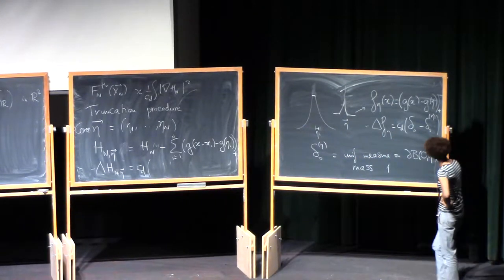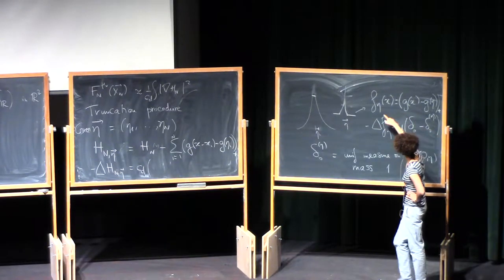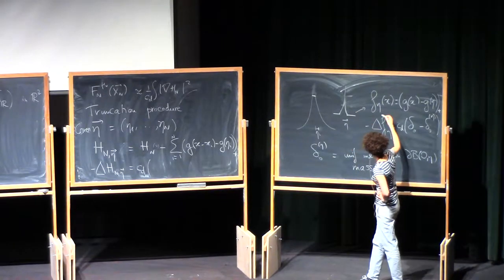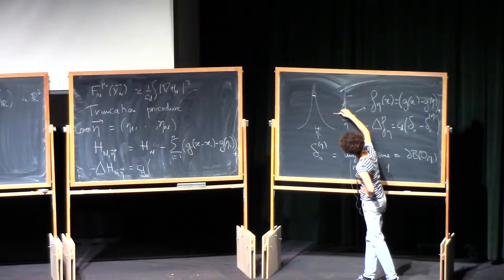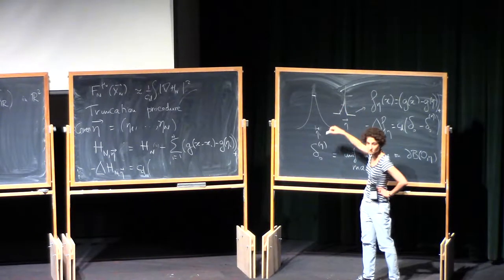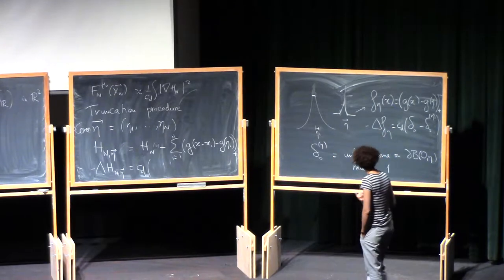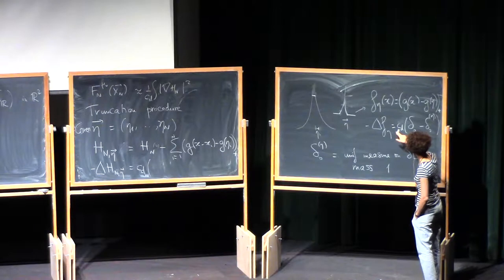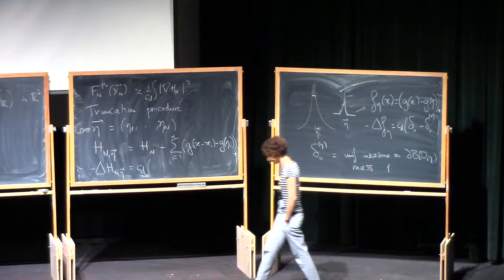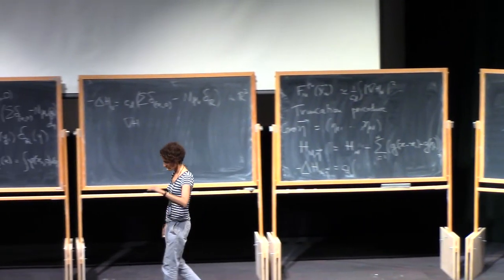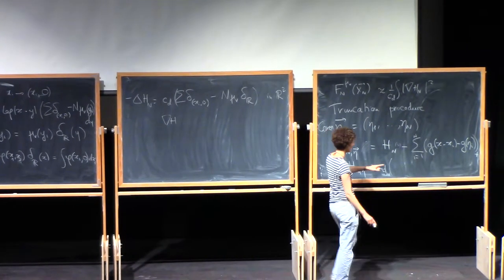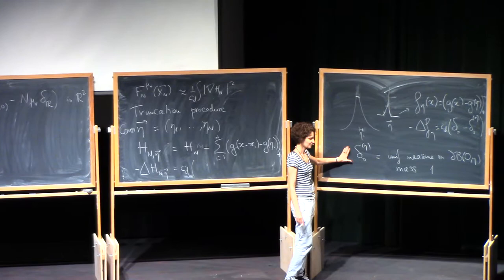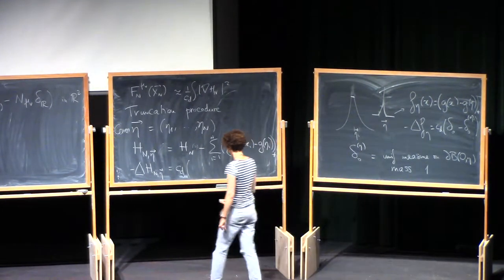It's a computation. The other way to see it is this thing is radial. So the Laplacian of f eta has to be something radial. And so it's natural then that it would be a uniform measure. Because this Laplacian is simply the jump of the normal derivatives when you reach the boundary of the ball. So it's supported on the boundary of the ball. And then by symmetry it has to be uniform. And the fact that it's total mass 1, it's easy to check because the total mass here has to integrate to zero.